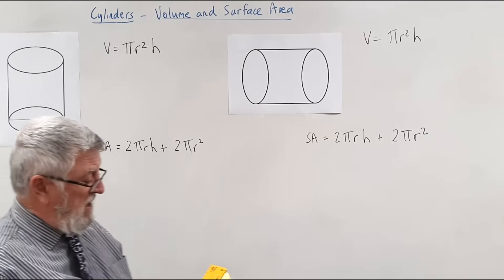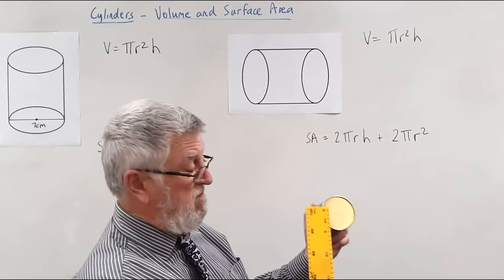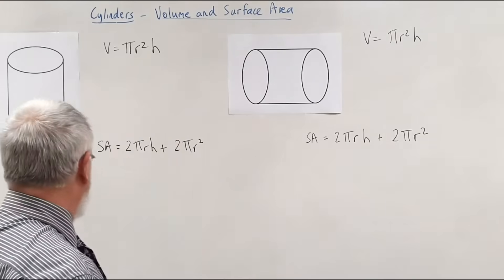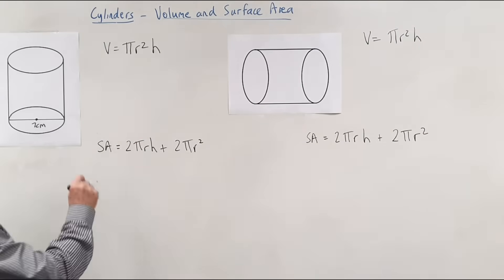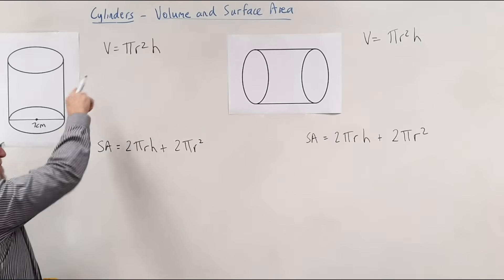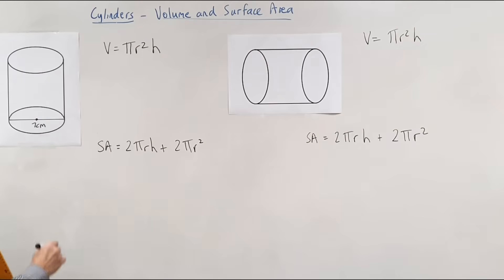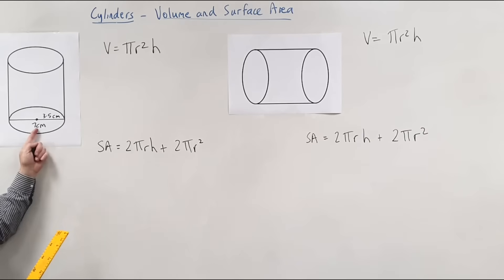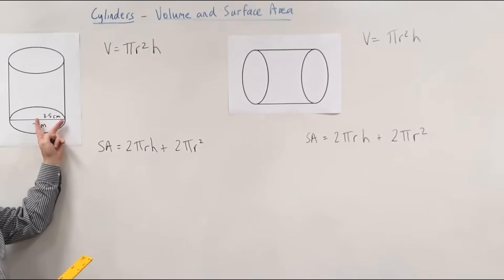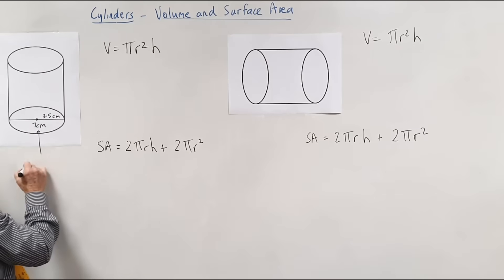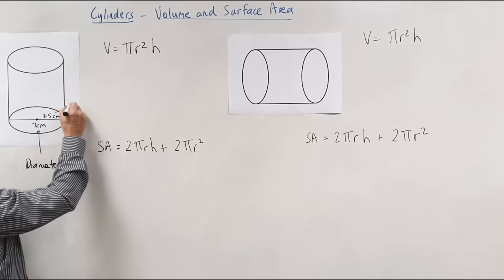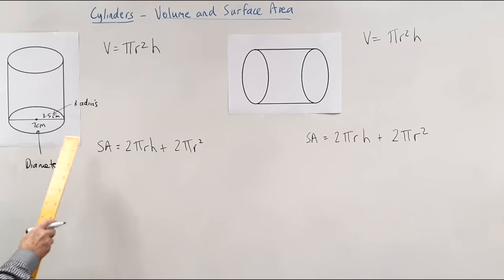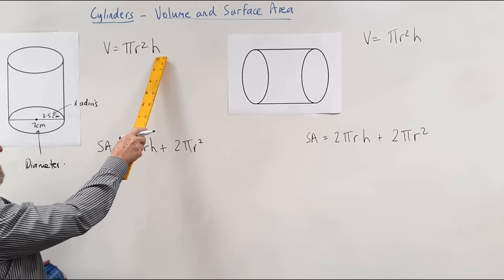Why did I measure the diameter? Because it's actually hard to measure the radius — you have to figure out where the middle is. That's one reason why questions often give you the diameter. You have to be careful because none of the formulas use D for volume or surface area. So half of seven is 3.5 — that's the radius. Seven written across here means all the way across; 3.5 written to the side means the radius, from the middle to the outside like spokes on a wheel.